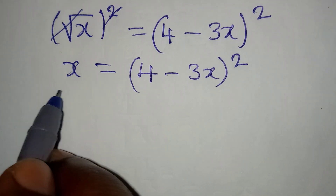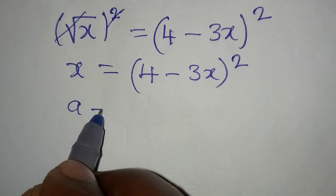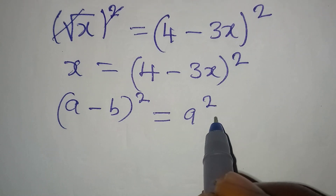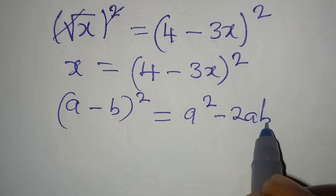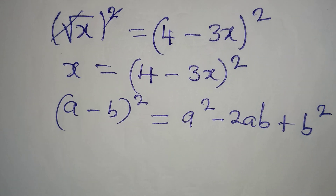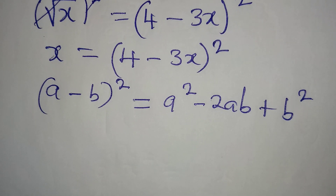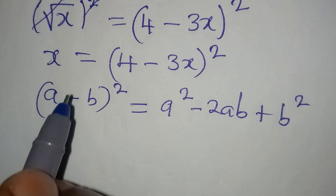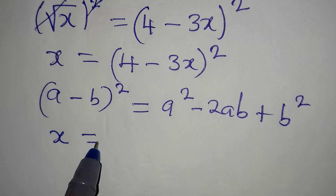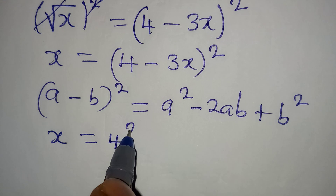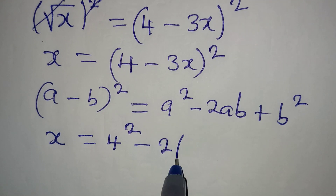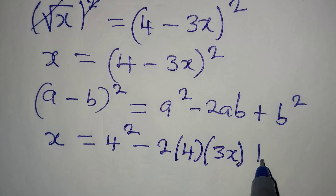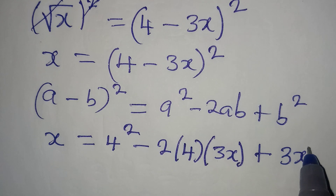To expand this, we follow the standard: (a minus b) squared equals a squared minus 2ab plus b squared. Here our a is 4 and our b is 3x. So x equals 4 squared minus 2 times 4 times 3x, then plus 3x squared.